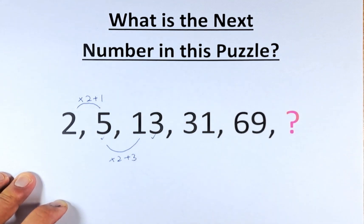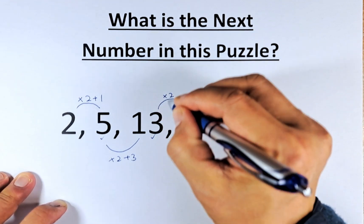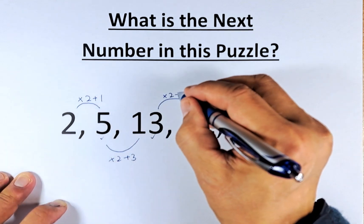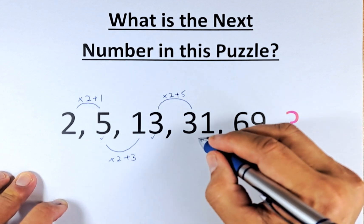Now we need to know from 13 to 31 and the same principle apply. You multiply by 2, instead of 1, 3, the next number it will be 5. So 13 times 2 is 26. 26 plus 5 is 31.